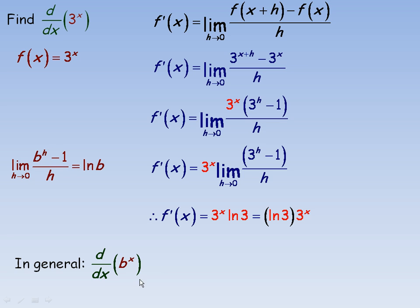So, in general, we did a specific example here of differentiating 3 to the x. In general, if it's any number b to the x, then the derivative is just the ln of that base times the original function. And that's the same for differentiating any real number to the power of x. Then it's the original function times the ln of the base.